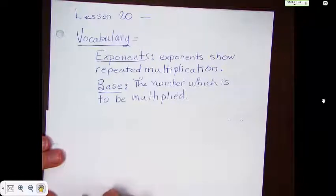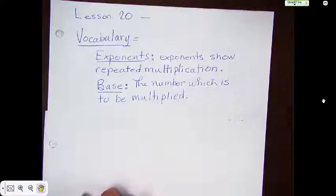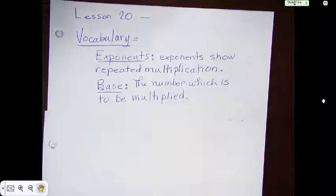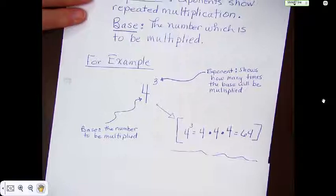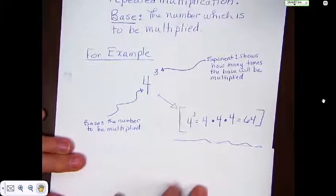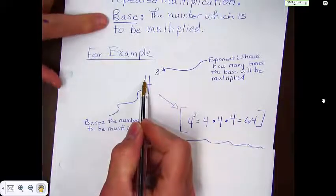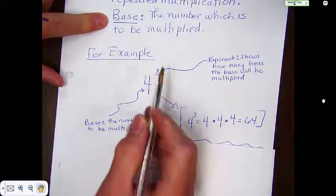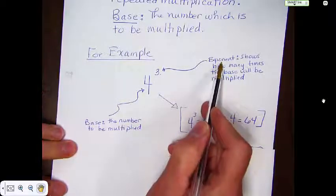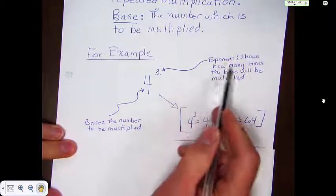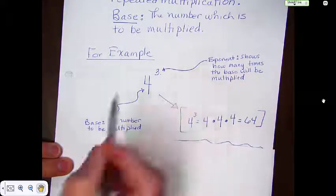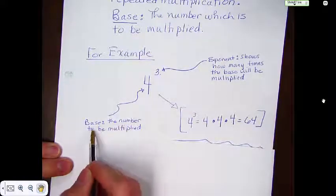Exponents show repeated multiplication. The base, which is another vocabulary word, is the number which is going to be multiplied. In this particular problem, 4 is the base and 3 is the exponent. The exponent shows how many times the base will be multiplied. The base is the number to be multiplied.